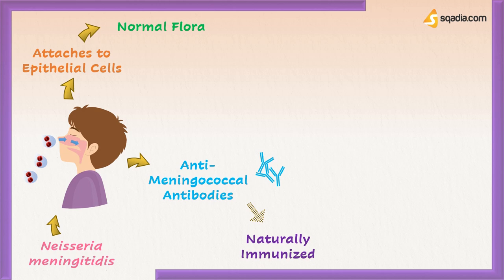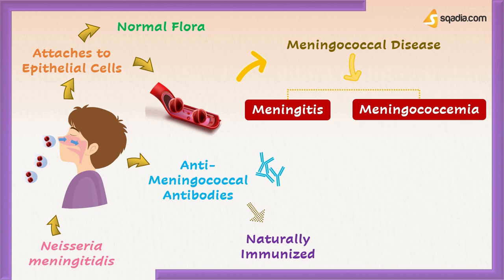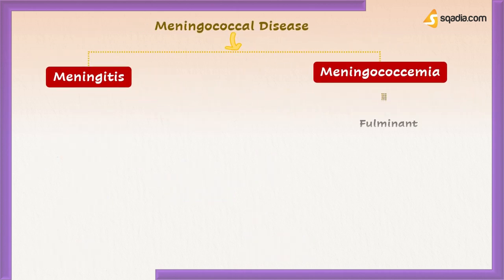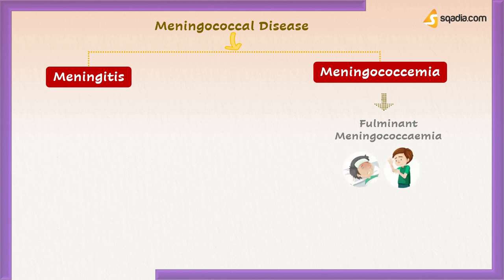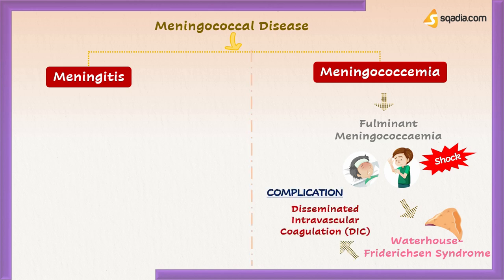Rarely, the bacteria invade the bloodstream to cause meningococcal disease, resulting in meningitis or deadly sepsis called meningococcemia. Fulminant meningococcemia is a severe condition with high fever, hemorrhagic rashes, and circulatory shock. Hemorrhages may occur in different sites of the body including the skin, causing petechiae, and bilateral hemorrhage into the adrenal glands, known as Waterhouse-Friderichsen syndrome. A frequent complication is disseminated intravascular coagulation (DIC), a serious disorder in which proteins controlling blood clotting become overactive, developing small blood clots throughout the bloodstream that block small blood vessels.